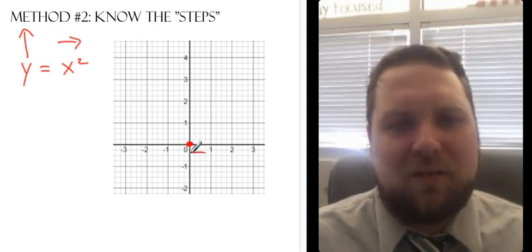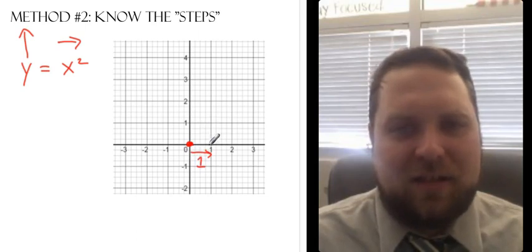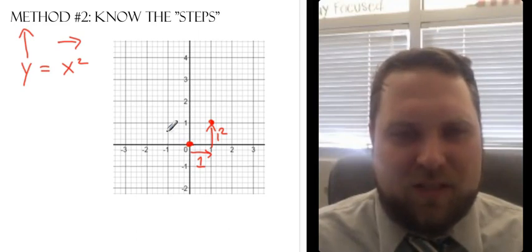And because I'm a good student, I memorize that the vertex of y equals x squared is at (0, 0). And now if I want to go out one place, I know I have to go up one place squared. So I go over 1, up 1 squared. Well, 1 squared is just 1. And I can do that over here. If I go out one, I have to go up one squared, which is also 1.